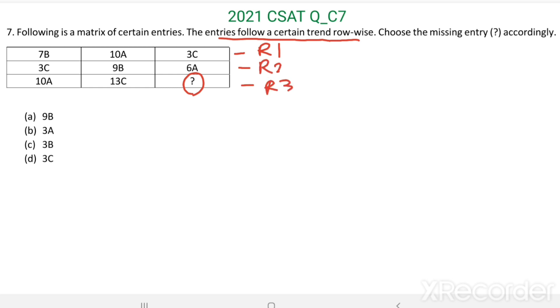We have to find which is the letter number combination in place of this question mark. In each row, there are three letters A, B, C and three numbers.